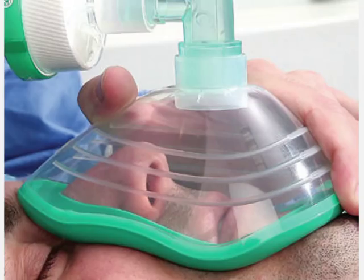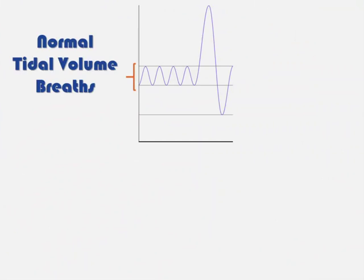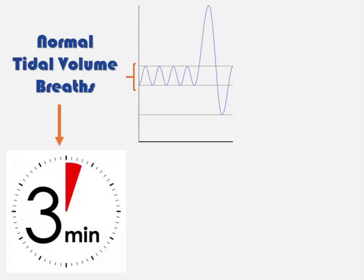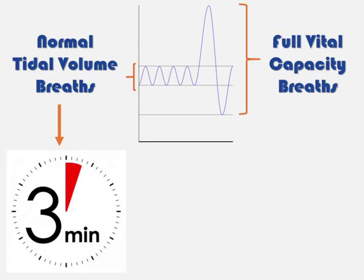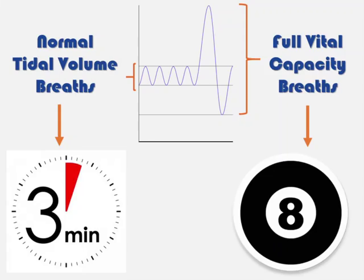To pre-oxygenate, you need a tight-fitting face mask with a proper seal on the patient's face and 100% oxygen flowing. For normal tidal volume breaths, hold the mask for 3 minutes. Alternatively, ask the patient to take full vital capacity breaths — a full inspiration and full expiration — and if they can give you 8 breaths over a minute, that should provide adequate pre-oxygenation. If you have end-tidal oxygen monitoring available, pre-oxygenation is adequate when the reading is more than 90%.